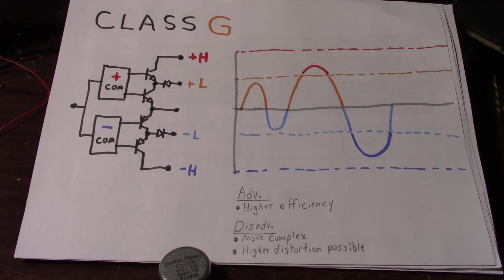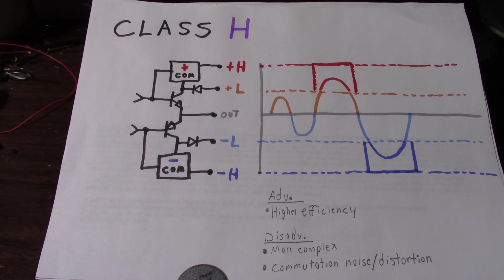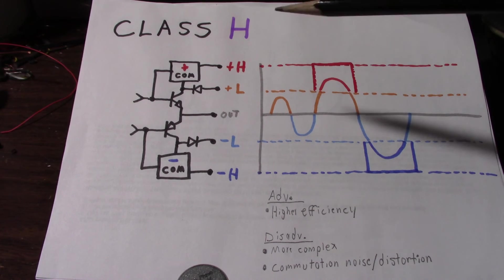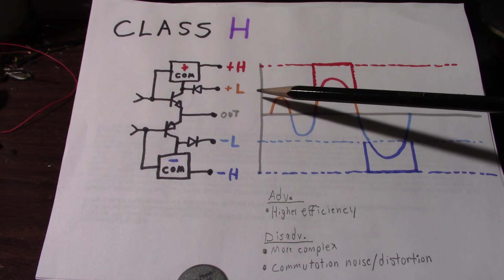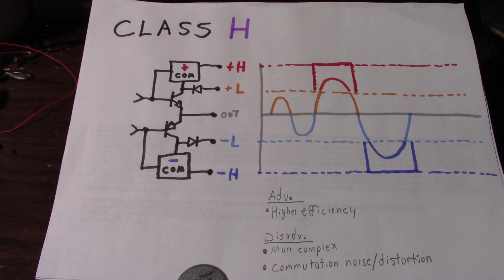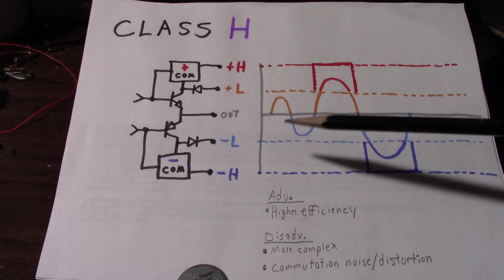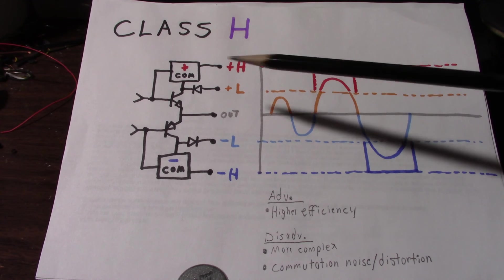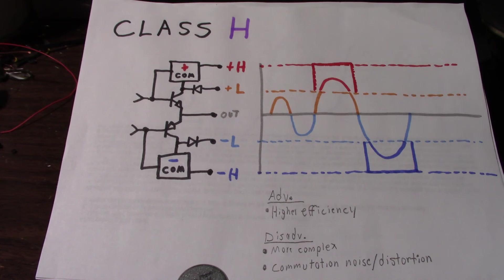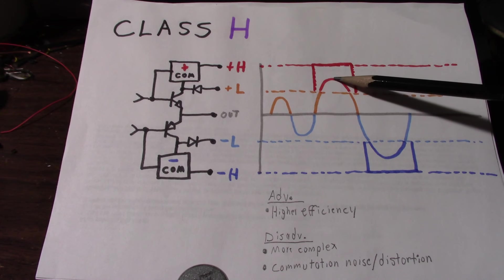Now we enter Class H, the final amplifier class I'm going to discuss in my little video series here. And it is quite a bit like Class G. We'll have two rails, but its operation is a bit different. Now with a smaller signal that operates within the lower rails, it acts like a normal Class AB amplifier. But when the signal needs to go beyond the lower rail, there's commutation circuitry that switches in a higher voltage supply. And now that signal can swing up higher without clipping.